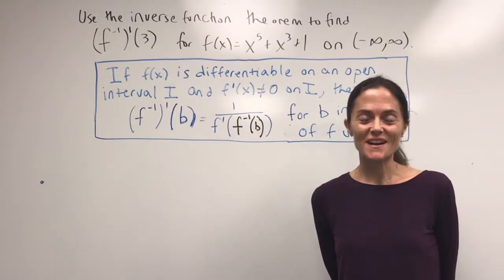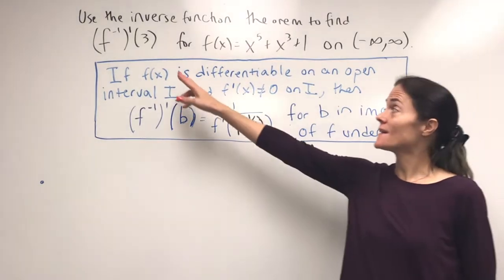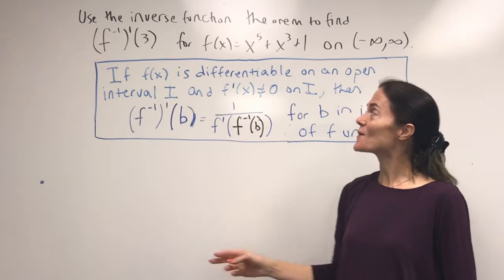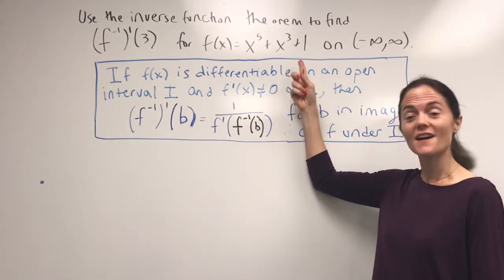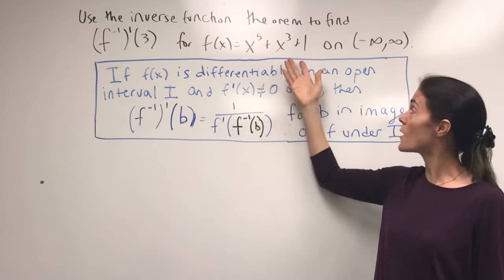We use the inverse function theorem in this problem. We want to find f inverse prime evaluated at 3 for this function, f(x) = x^5 + x^3 + 1.